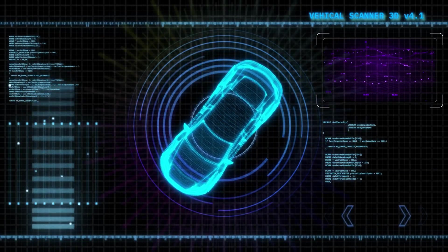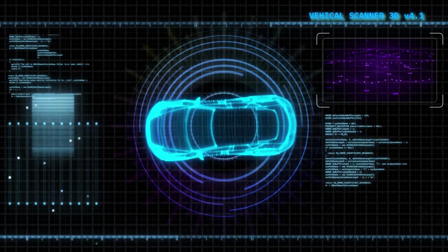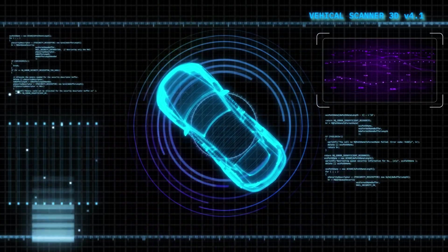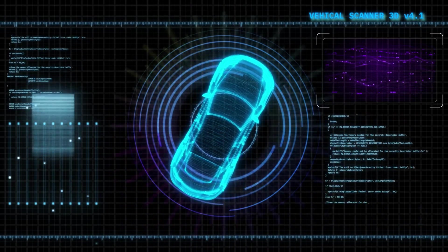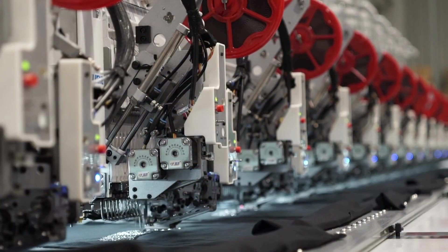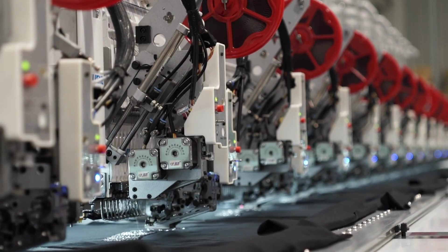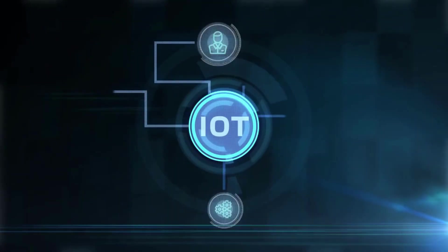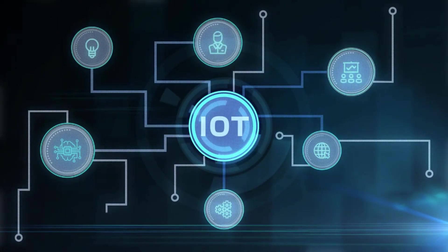In industrial settings, IoT devices are used to monitor and optimize operations. Examples include sensors and accelerometers in manufacturing equipment, smart energy grids, and predictive maintenance systems.